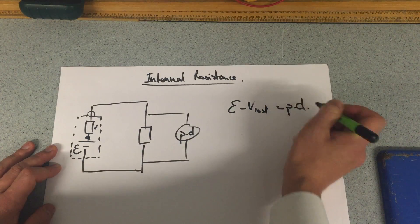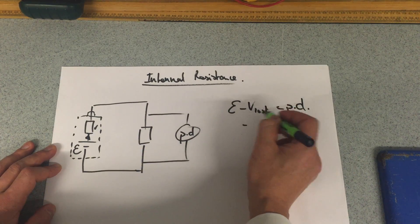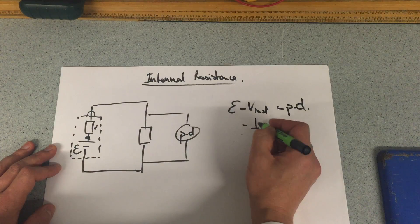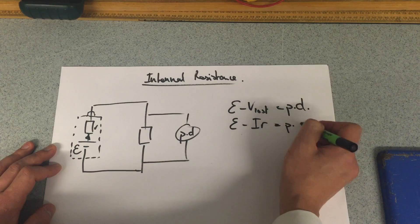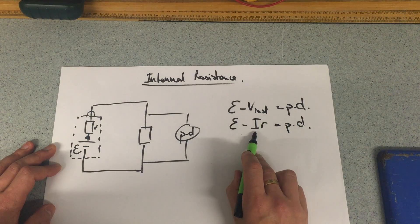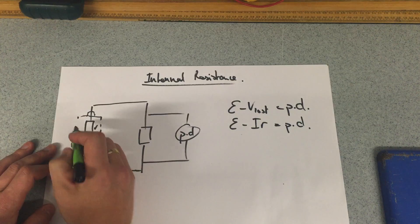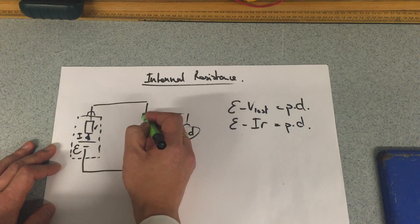gives us the PD. And how to quantify lost volts would be the current drawn times by the internal resistance, and that gives us the PD. So if we have a larger current drawn through here, which is the same